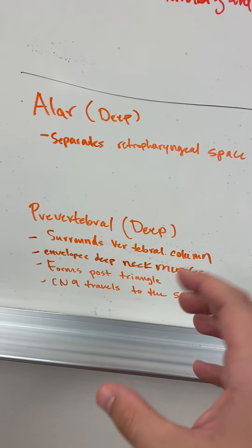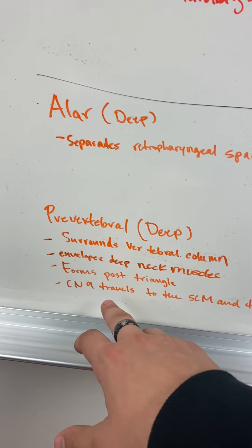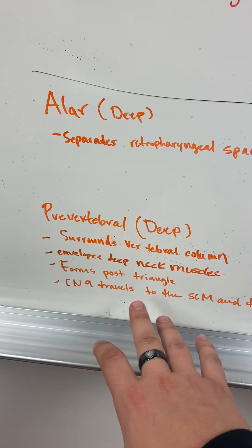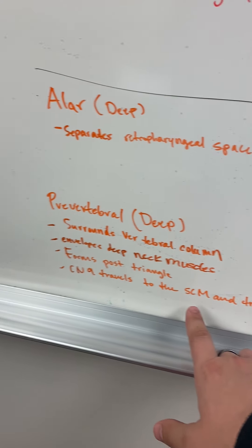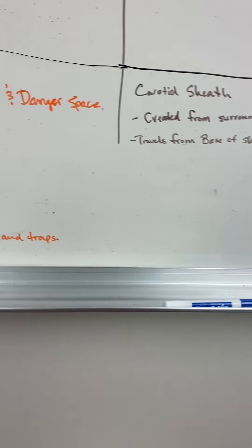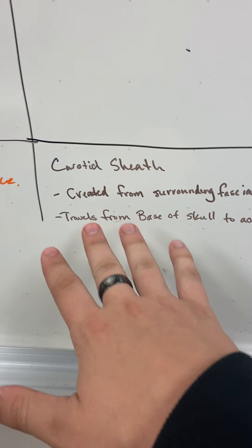It surrounds the vertebral column and those deep muscles in the neck, and it forms the posterior triangle from our triangle lecture. Cranial nerve IX travels to the SCM and the traps.